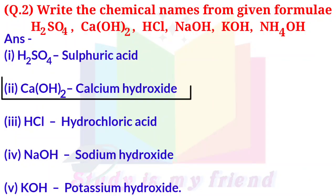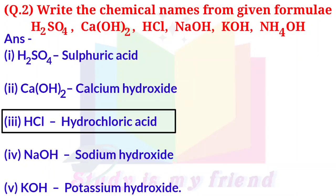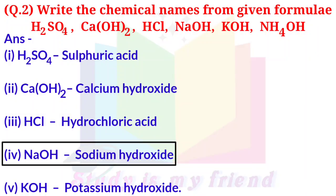Ca(OH)2 is calcium hydroxide. HCl is hydrochloric acid. NaOH is sodium hydroxide.